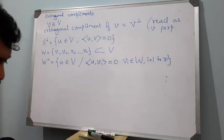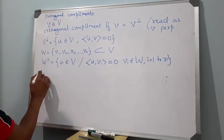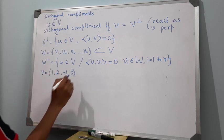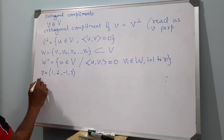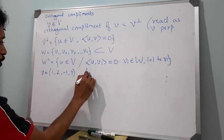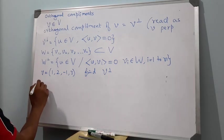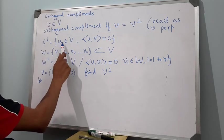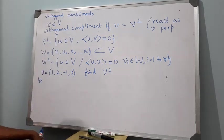Now, to understand this, let us consider an example. Let v equal to (1, 2, -1, 3). Find the orthogonal complement v perp. For that, we have the definition of v perp to be the set of all vectors of V such that the inner product of those vectors with v is 0.